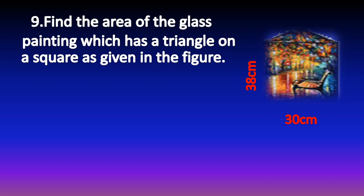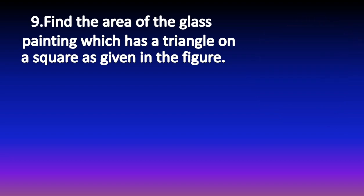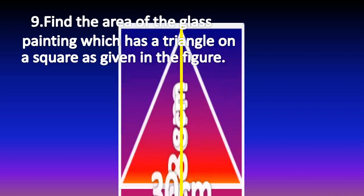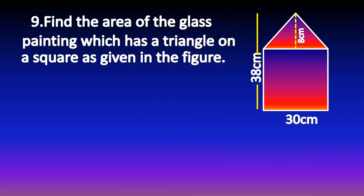You can see this painting — it has a square shape and a triangle over it. We have to find the area of this given painting. You can see a square shape, and a triangle placed on top of it.